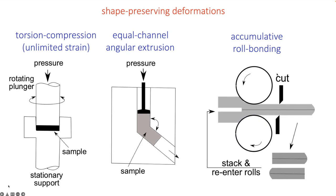This is an interesting process called accumulative roll bonding, invented by Professor Tsuji in Japan, where basically you have plates stacked on one another, you roll them, and after they come out thinner you chop them up, stack them again and return them into the roll. Again you are maintaining the shape of the sample but in every single pass you are introducing more deformation. All of these processes preserve the shape of the product and you end up with a severely cold-worked sample which is strong, but of course you need a combination of properties.